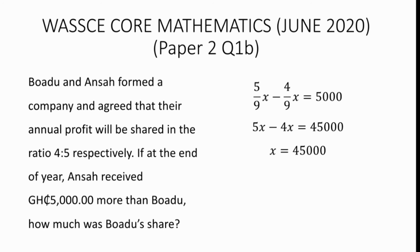The question asks us to find the amount Bodo received. So we can state that Bodo's share equals 4 over 9 multiplying x which is now 45000 Ghana cedis. So Bodo's share equals 20000 Ghana cedis.